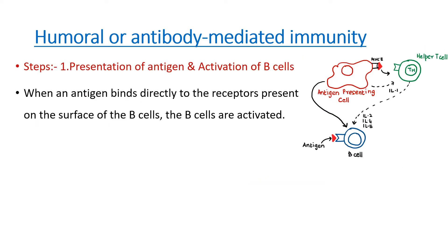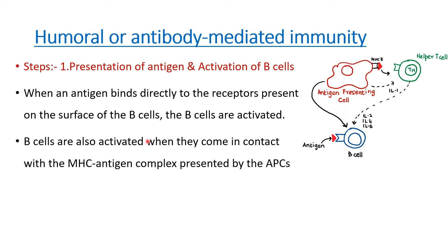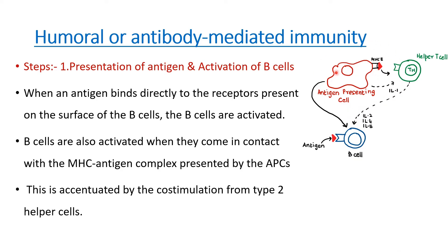To summarize activation: when an antigen binds directly to receptors on the surface of B cells, the B cell is activated. B cells are also activated when they contact the MHC-antigen complex presented by antigen-presenting cells, and this is accentuated by co-stimulation from helper T cells.